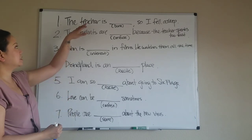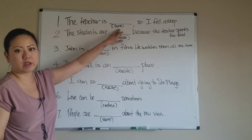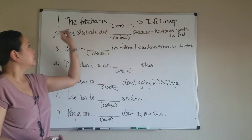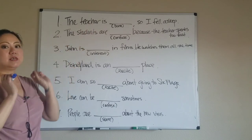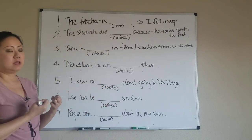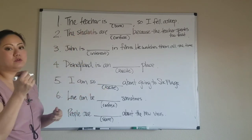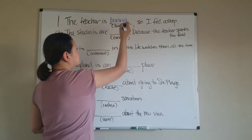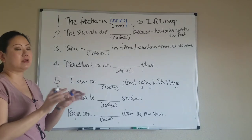Let's look at this sentence: 'The teacher is ___' using the verb 'bore' — boring or bored. 'I fell asleep.' So is the teacher giving the feeling or receiving the feeling? In this case, the teacher is giving the feeling, so we use ING: 'The teacher is boring, so I fell asleep,' because the teacher is giving that feeling.